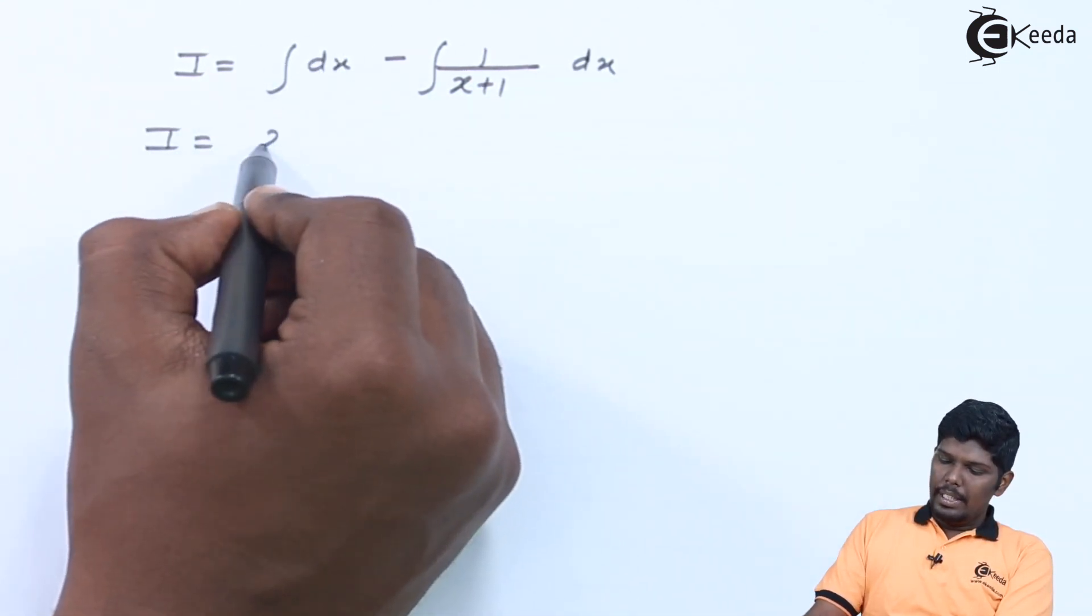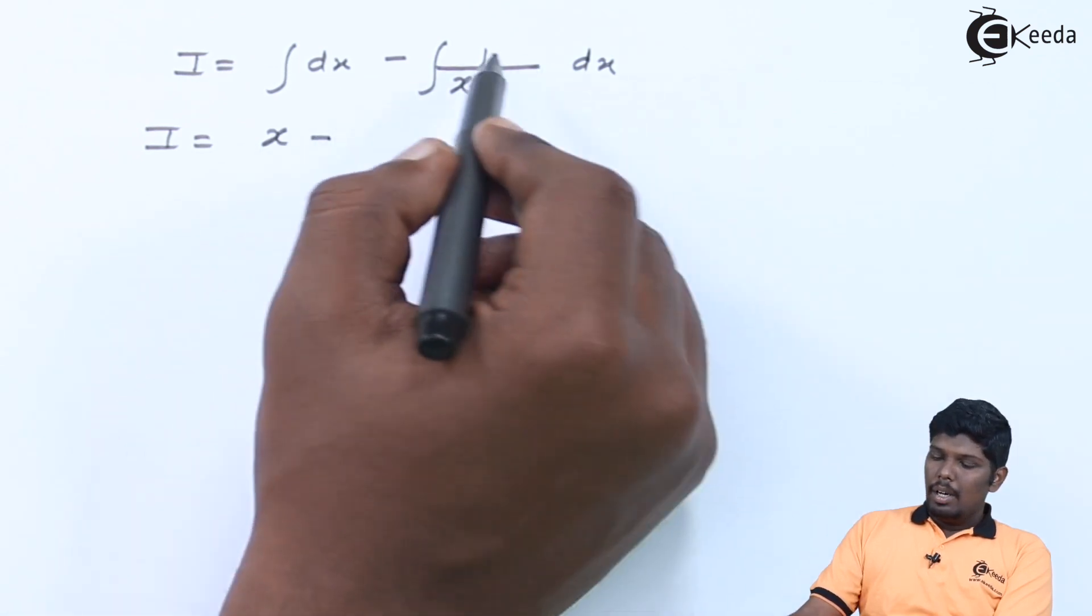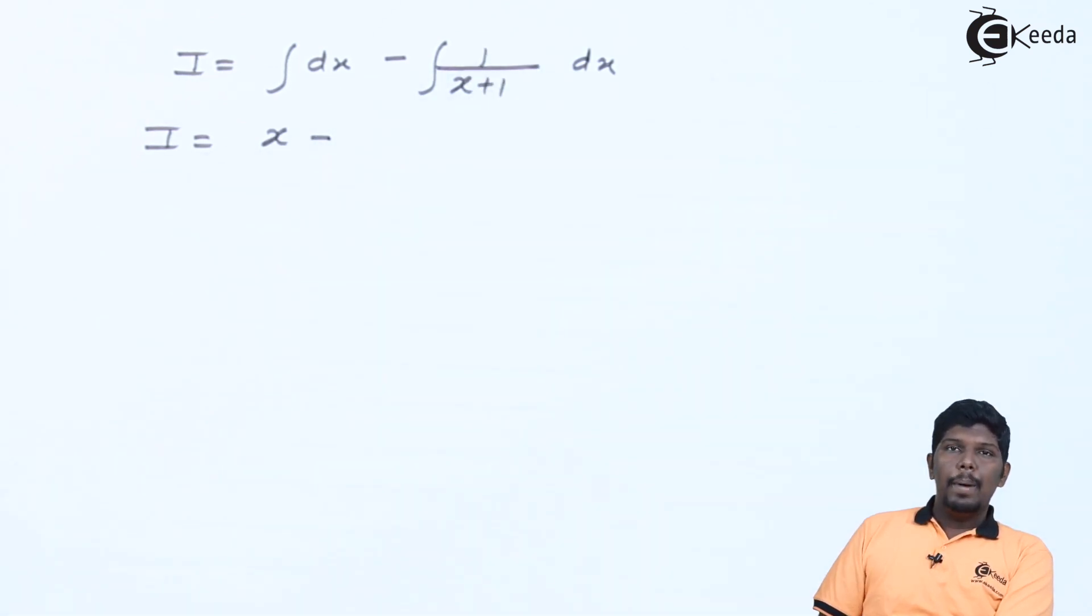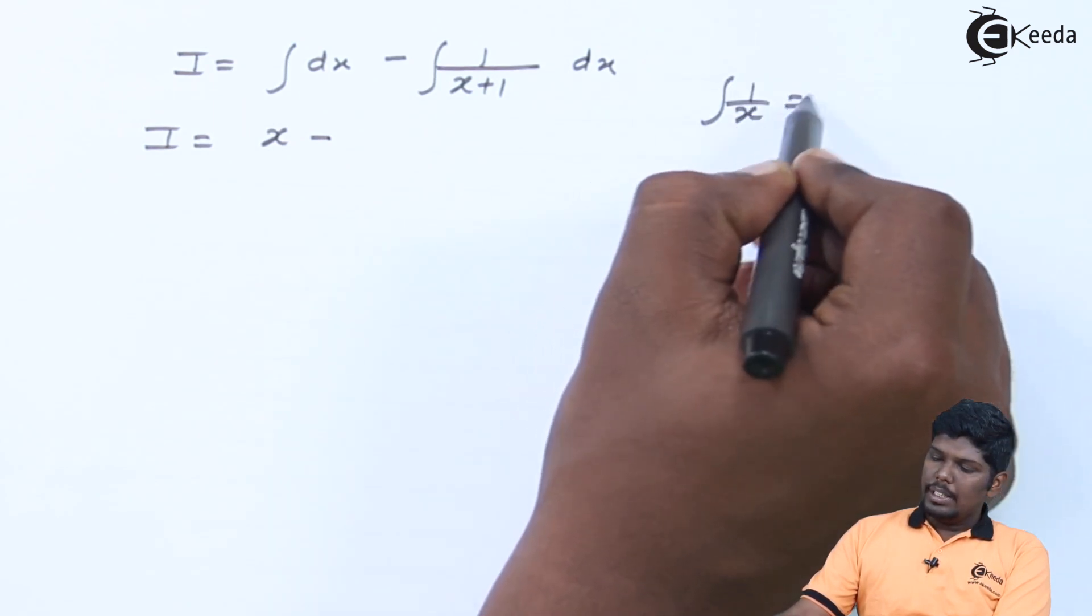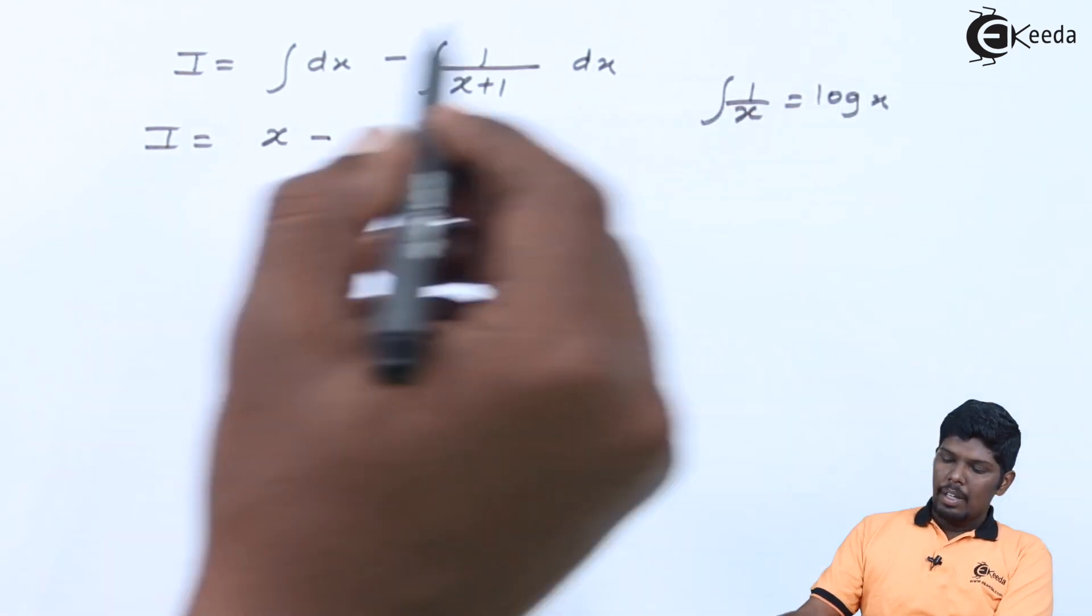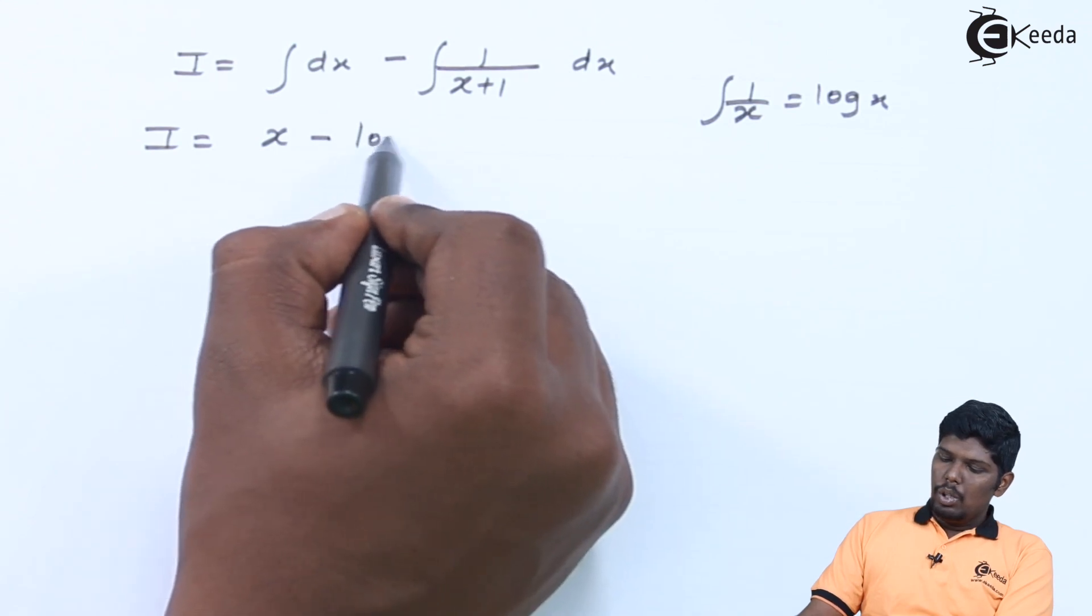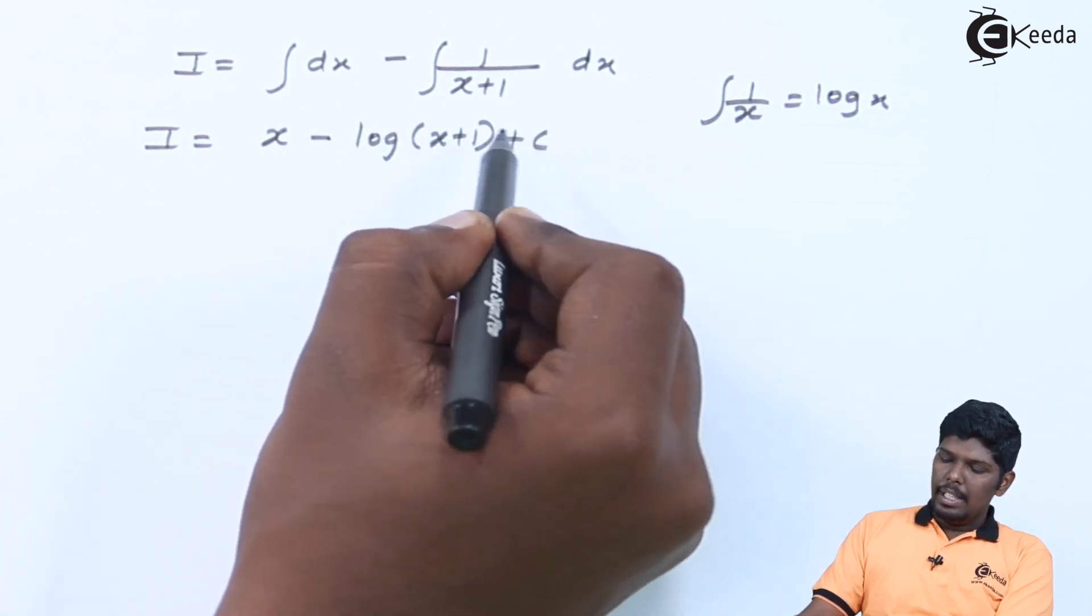Integration of dx, we know it is x minus 1 upon x plus 1 can be compared with 1 upon x and we know that integration of 1 upon x is log x. This will give you log of x plus 1 plus c.